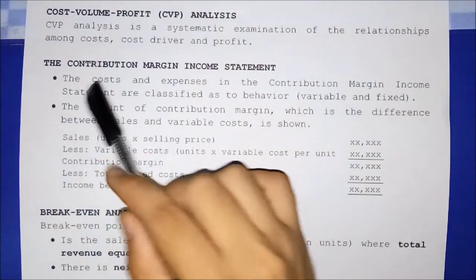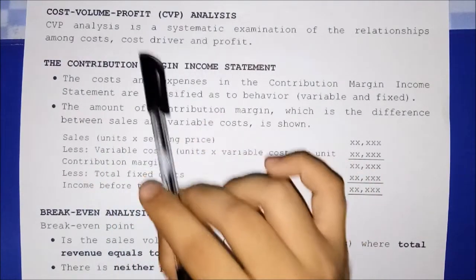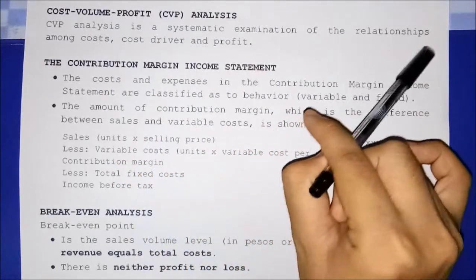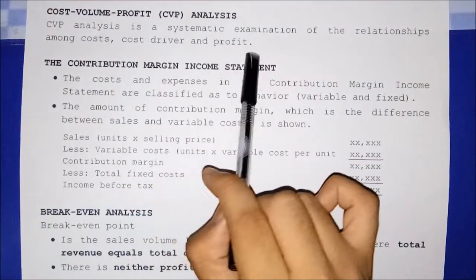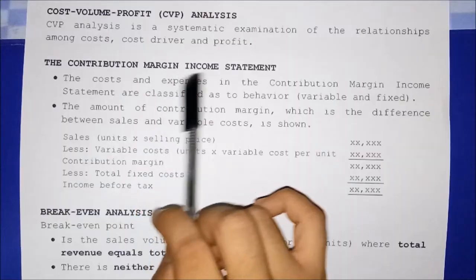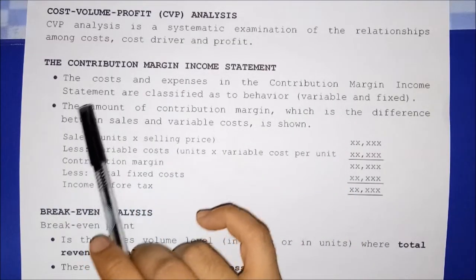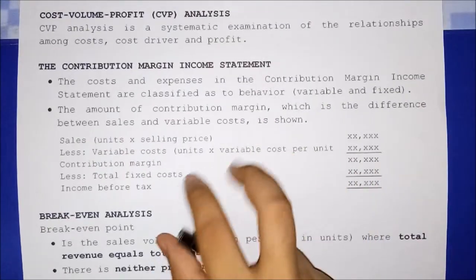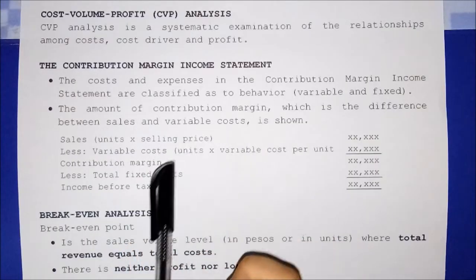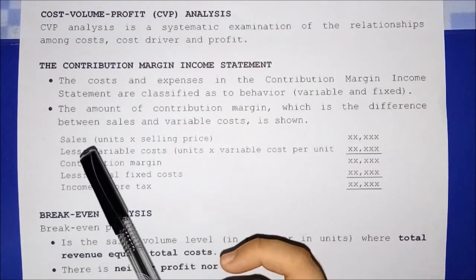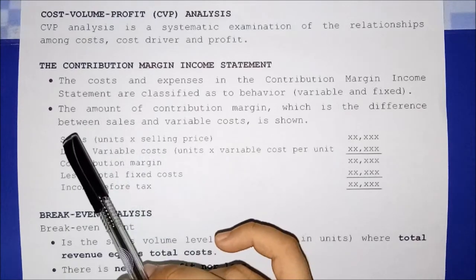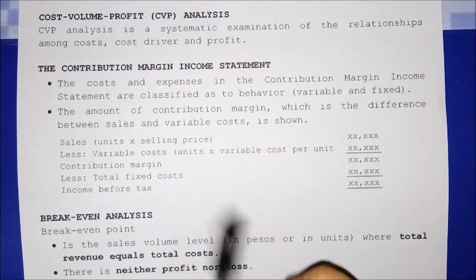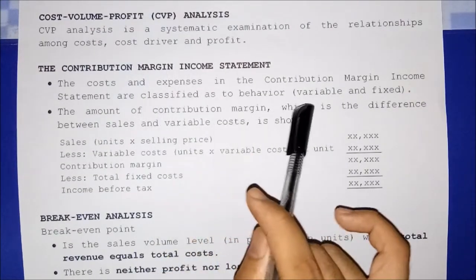Cost-volume-profit analysis (CVP analysis) is a systematic examination of the relationships among cost, cost driver, and profit. The contribution margin income statement classifies costs and expenses by behavior — variable and fixed — unlike the traditional income statement.